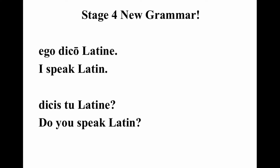So if you already know 'yo hablo español' and 'hablas tú español,' you already know how to say this in Latin. 'Ego dico latine.' Now, one difference is that in Latin they use an adverb here. 'Latine' is an adverb which means 'Latinly' — like 'do you speak Englishly?' instead of 'do you speak English.' That's just how Latin works.